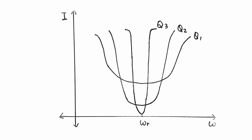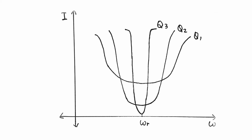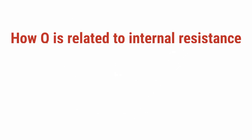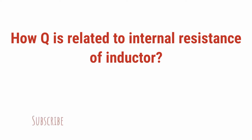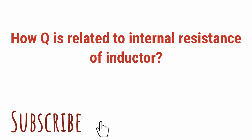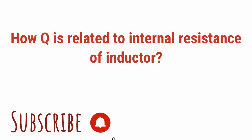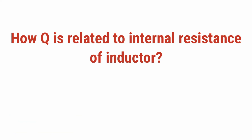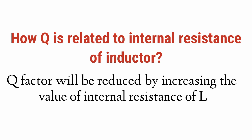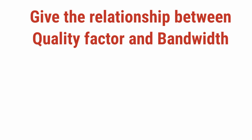How is quality factor related to the internal resistance of the inductor? The shape of the curve can be varied either by increasing the internal resistance or by adding an external shunt resistor. If you increase the internal resistance of the inductor, the quality factor will be reduced.